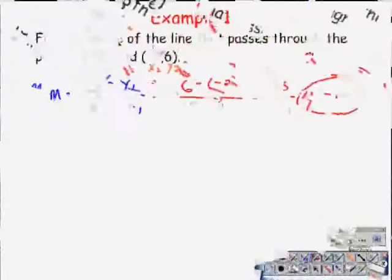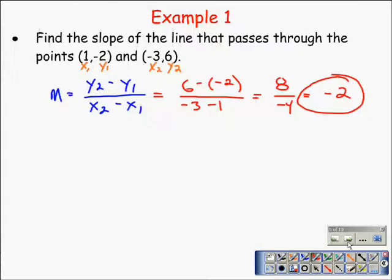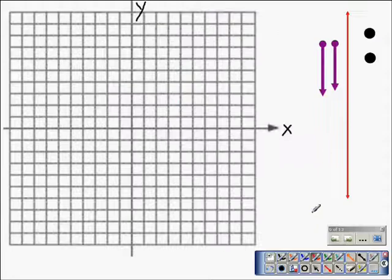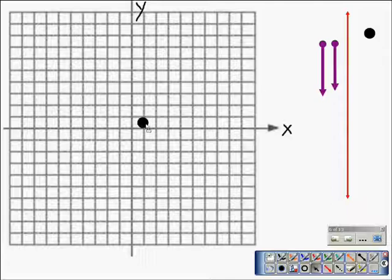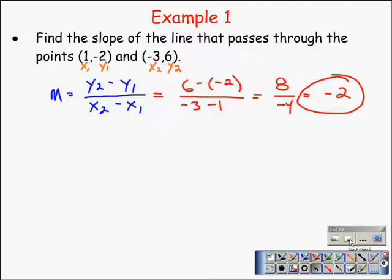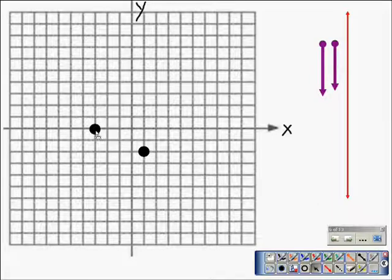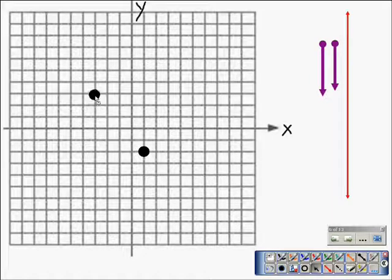Now let's see how that relates to a graph. The points we were working with were 1 negative 2. So to the right one, down to 1 negative 2. And the other point was negative 3, 6. So I'm going to graph it negative 3, 1, 2, 3 and up 6: 1, 2, 3, 4, 5, 6.